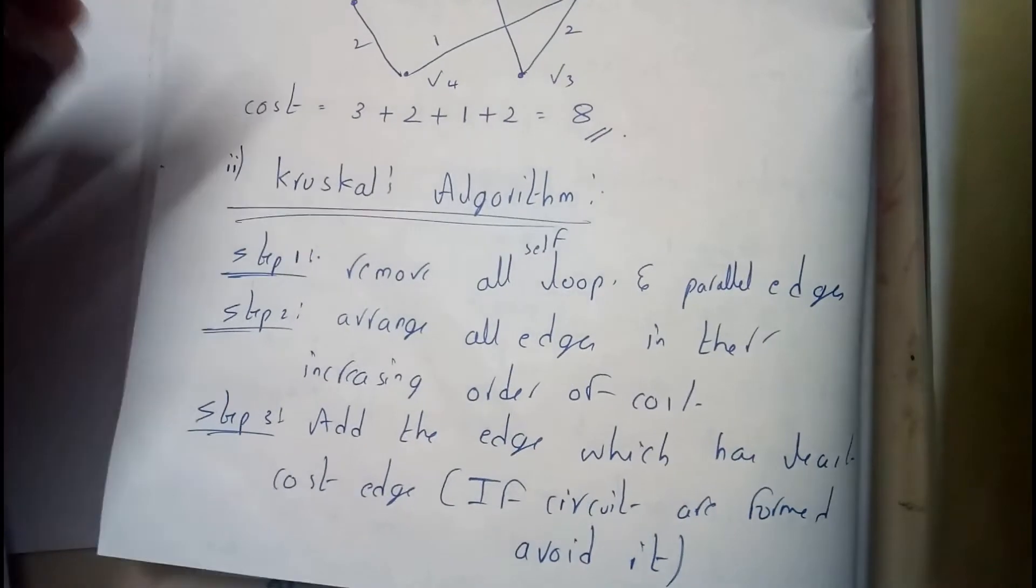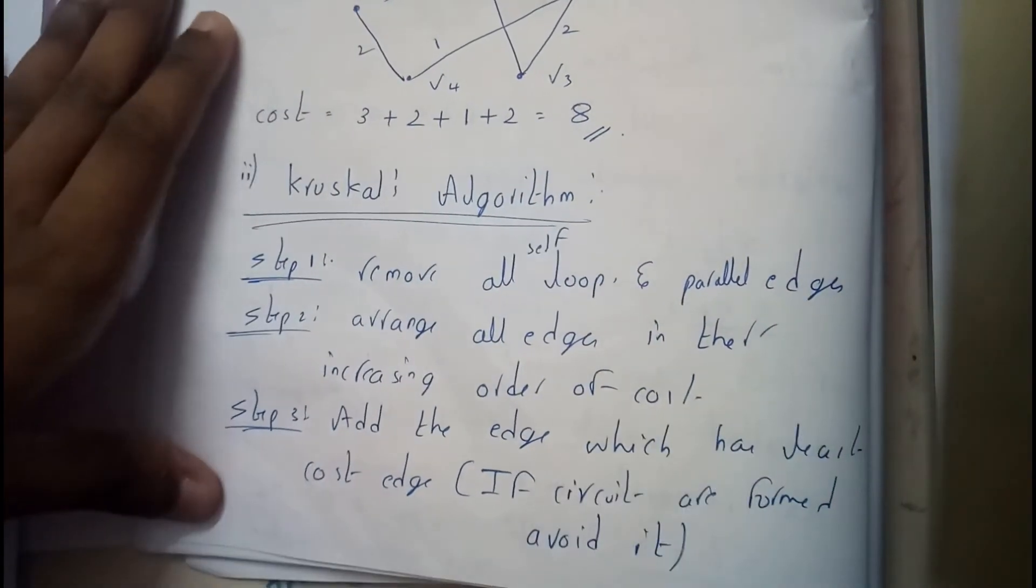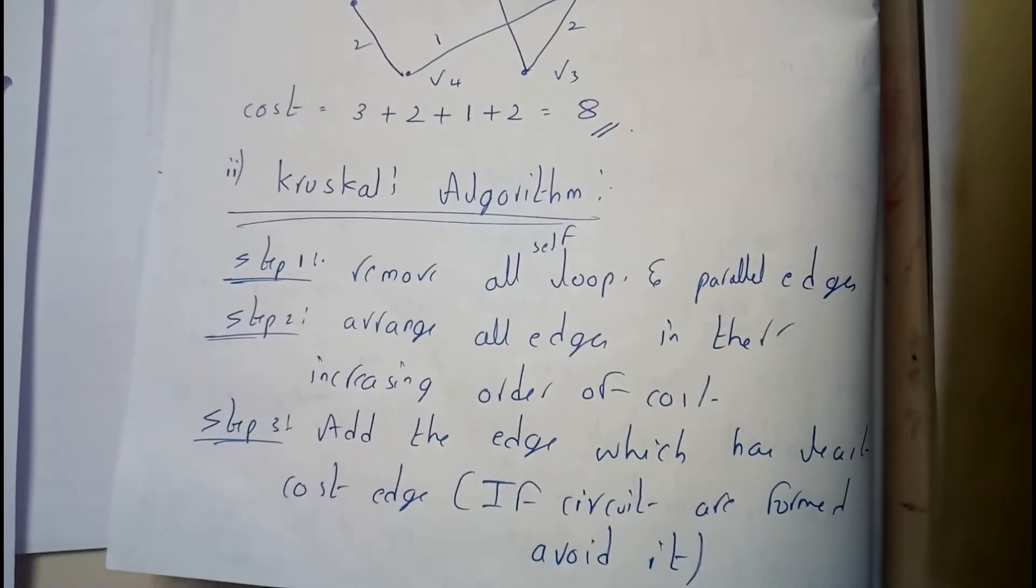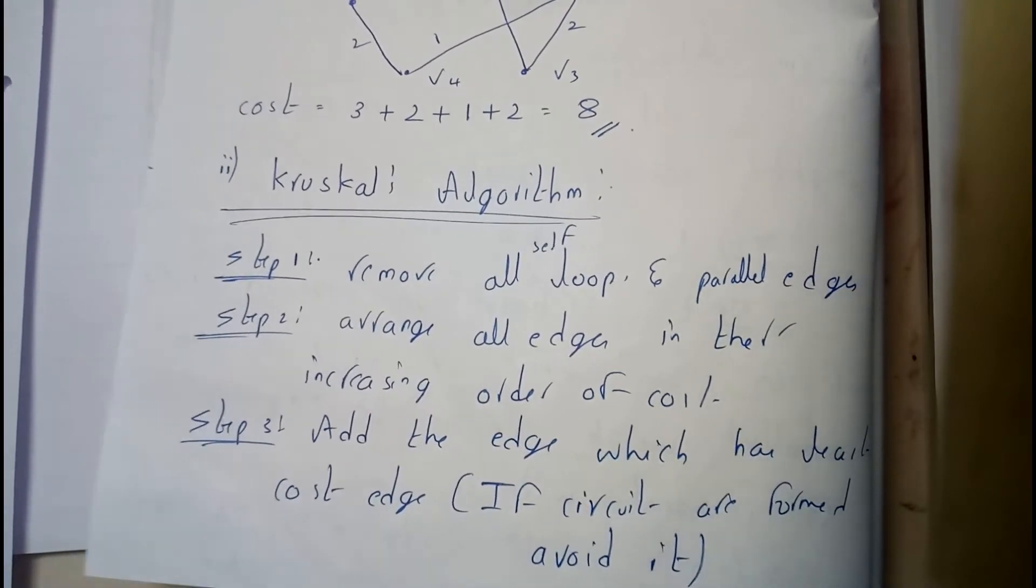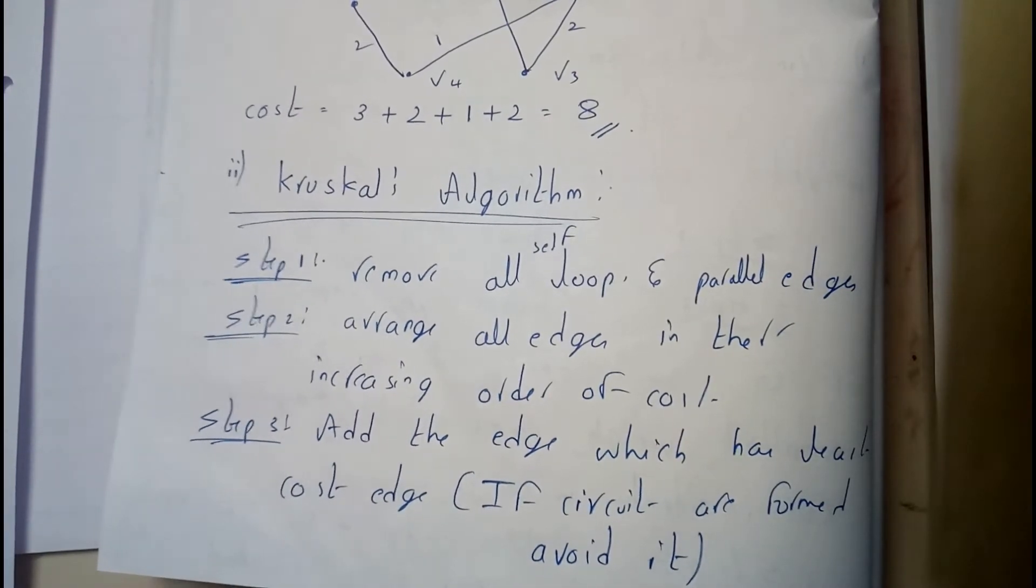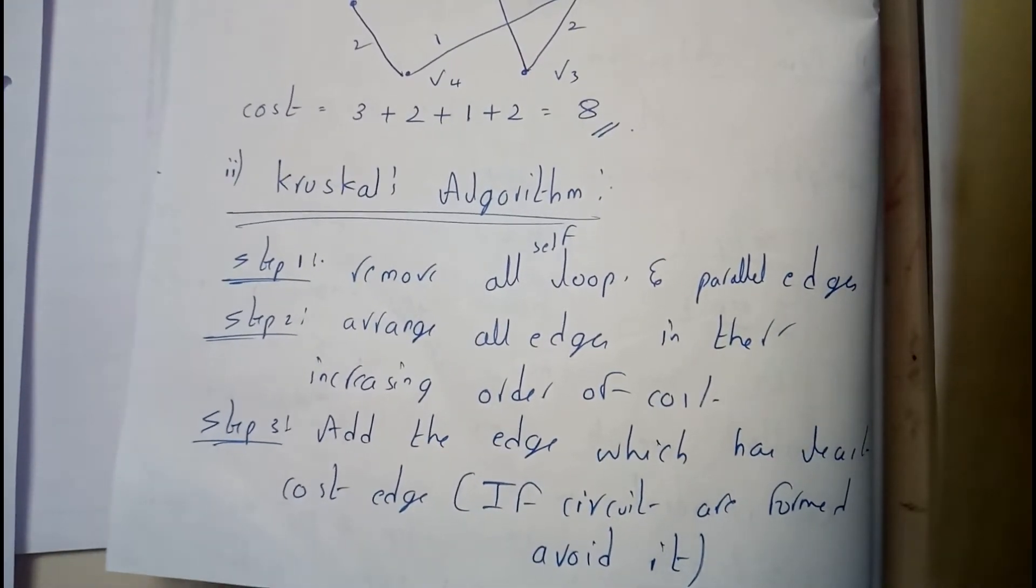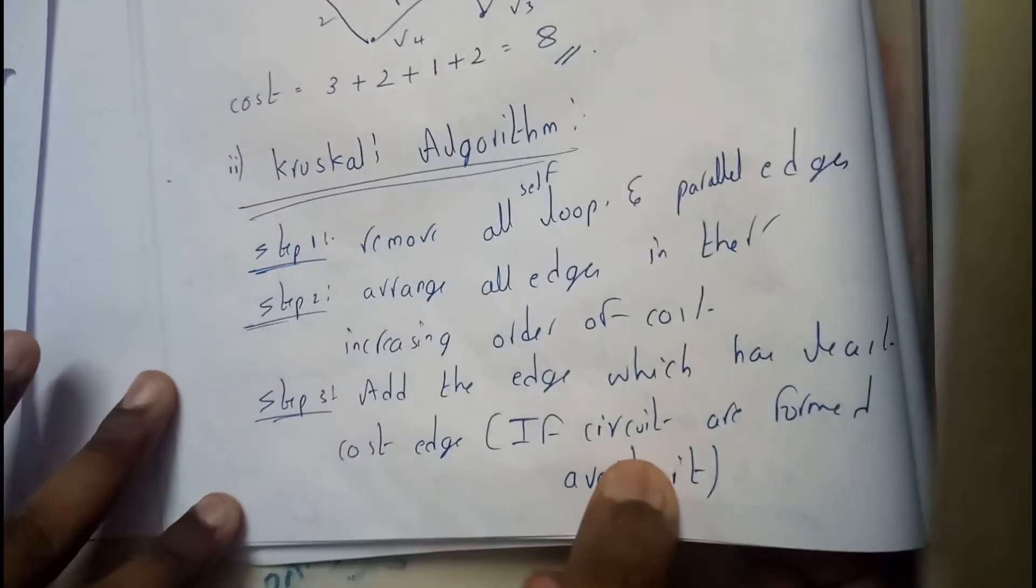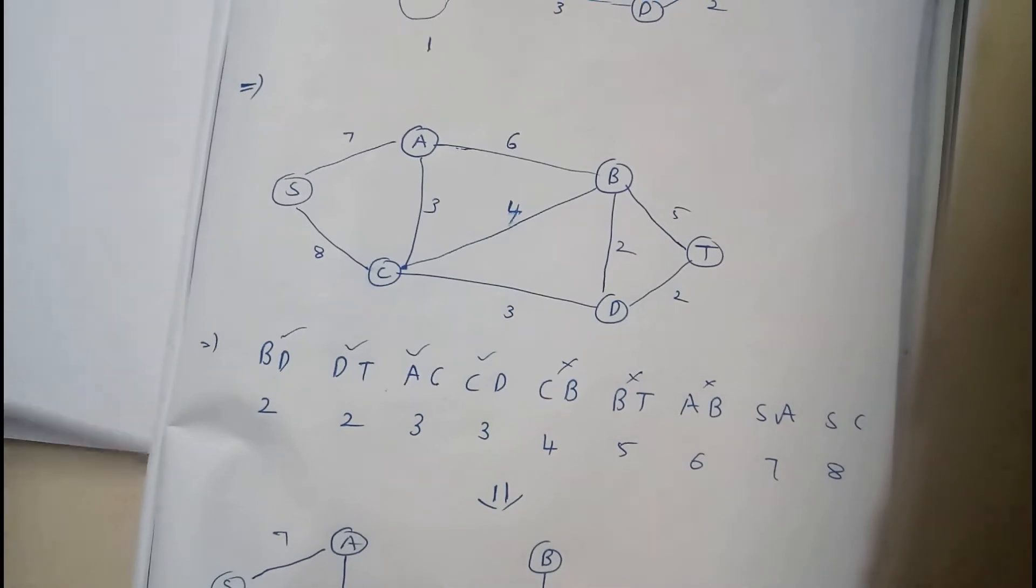Let's go through Kruskal's algorithm now. Kruskal's algorithm is also same like this. Initially for any of this, both you will be removing the self loops and parallel edges. So now, after once that's done, you will be creating a table or column. You will be giving the edge name and the cost, and you will be arranging them in such a way that they are in ascending order.